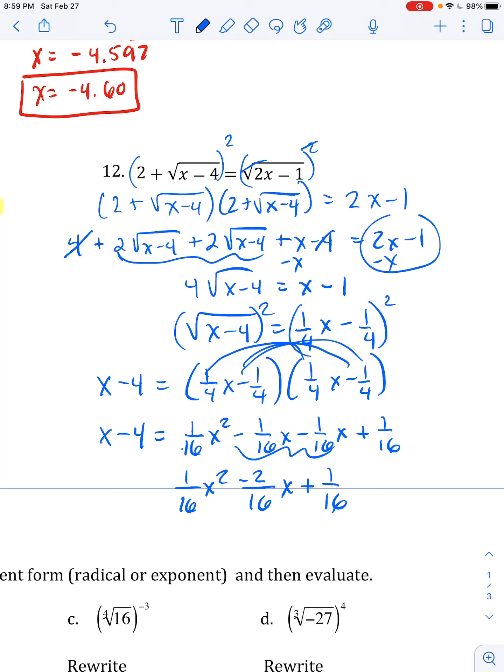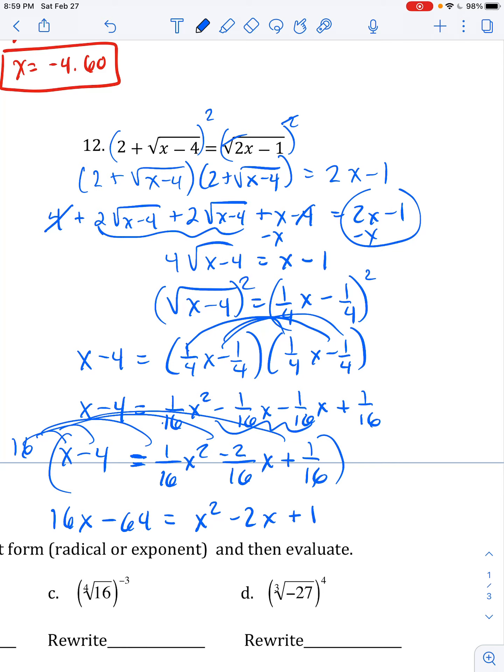This whole problem is messy and so what I'm going to do is I wish that everything was 16 times bigger. So I'm going to go ahead and multiply every single part by 16. So I'll have 16x - 64 equals x² - 2x + 1, because I'm just multiplying 16 by each thing. But once I get to the right of the equal sign, the top 16 and the bottom will cancel.